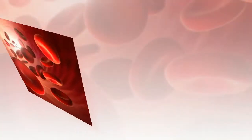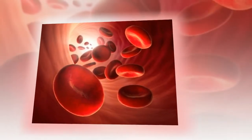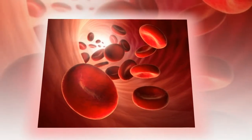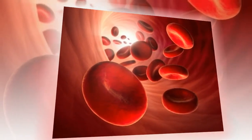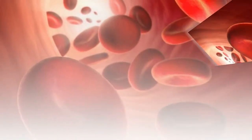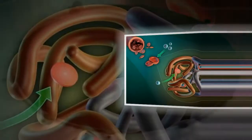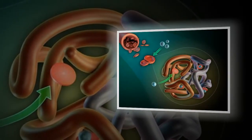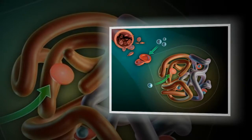The free hemoglobin is exposed to a chemical containing cyanide that binds tightly with the hemoglobin molecule to form cyanomet hemoglobin. By shining a light through the solution and measuring how much light is absorbed, specifically at a wavelength of 540 nanometers, the amount of hemoglobin can be determined.